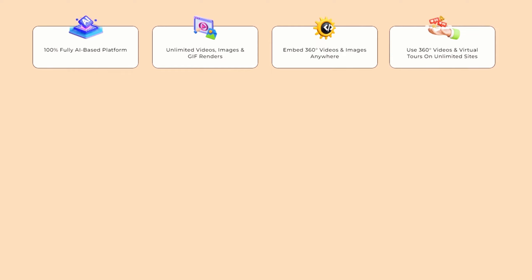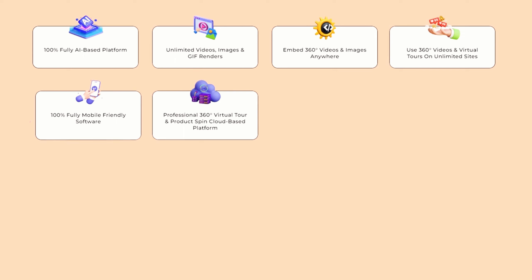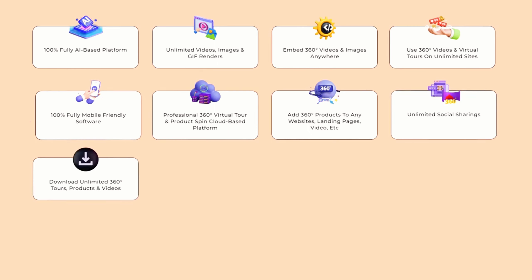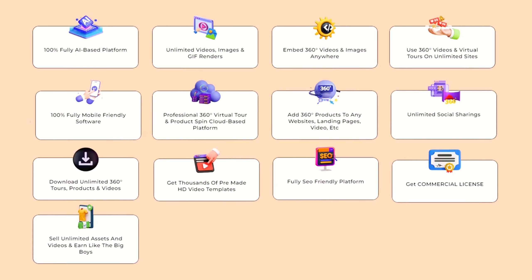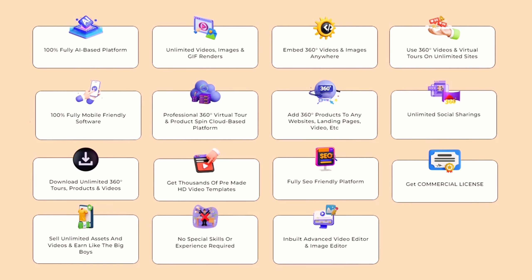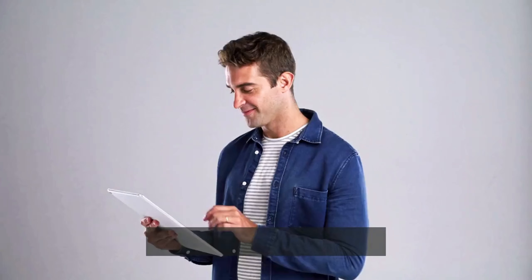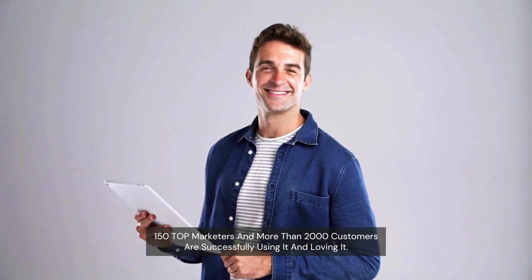With 360 Hub AI you will get a 100% fully AI-based platform with unlimited videos, images, and GIF renders. Embed 360-degree videos and images anywhere, use them on unlimited sites, and enjoy 100% fully mobile-friendly software. Add 360-degree products to any websites, landing pages, or videos. Get unlimited social sharing, download unlimited 360-degree tours, products and videos, and access thousands of pre-made HD video templates. Fully SEO-friendly platform, commercial license included. Sell unlimited assets and videos with no special skills or experience required, plus an in-built advanced video editor and image editor.